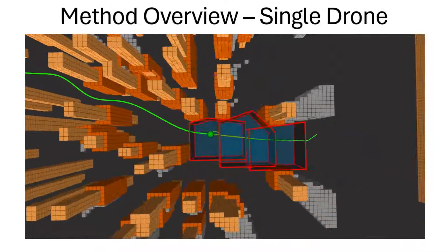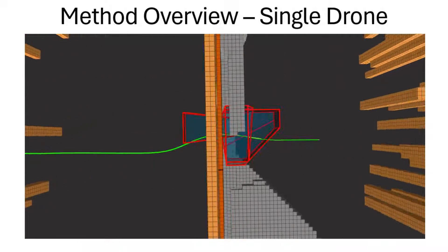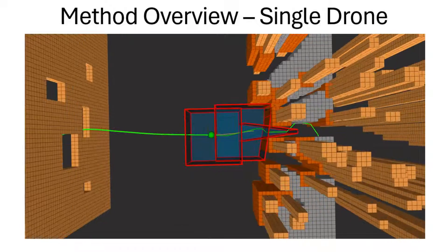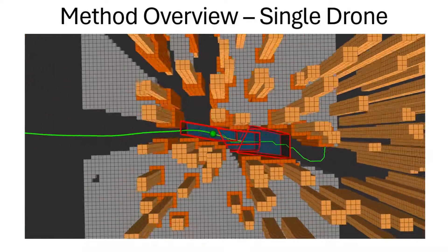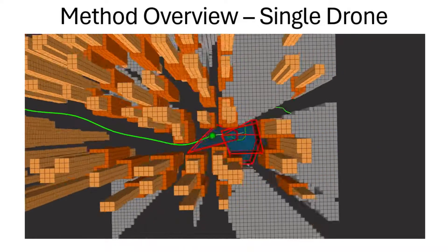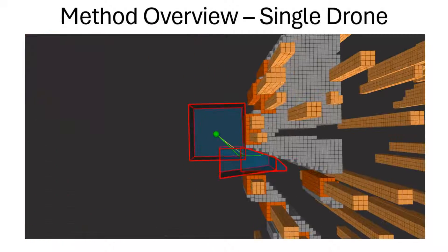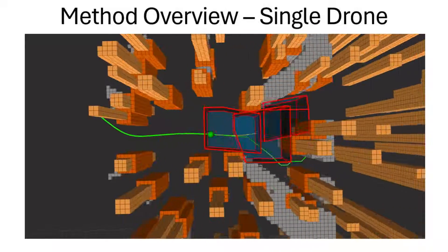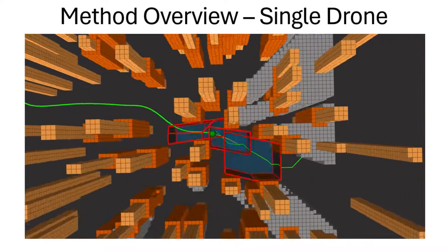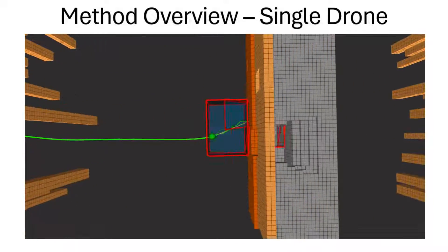A path to the goal is computed periodically and is shown as the green path in front of the drone. A time-aware safe corridor is constructed around the path and is shown as the red overlapping polyhedra. Finally, a dynamically feasible trajectory is generated inside the time-aware safe corridor which allows to avoid static obstacles as well as other agents while following the path to the goal.